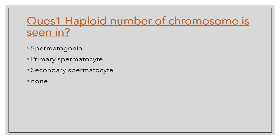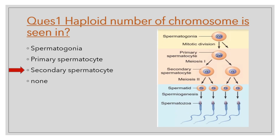Question number 1: Haploid number of chromosomes are seen in spermatogonia, primary spermatocyte, secondary spermatocyte, or none? The correct option is C, secondary spermatocyte. As you can see in the diagram, spermatogonia is 2N, meaning it is not haploid. Primary spermatocyte is also 2N and diploid. But the secondary spermatocyte is N in number and is haploid.